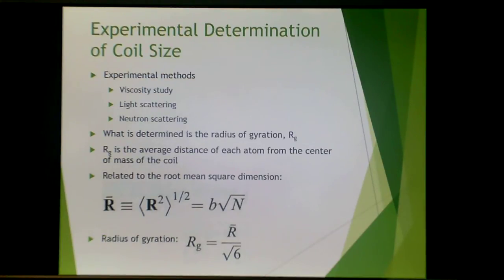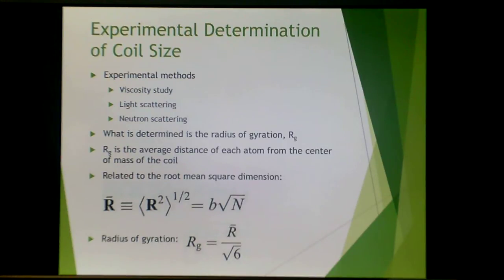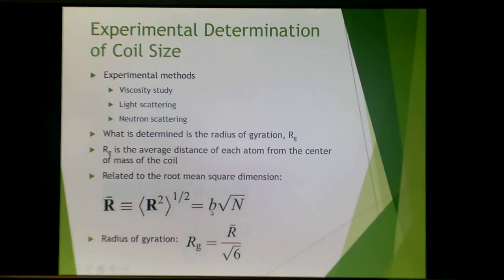There are various ways to experimentally determine coil size, including viscosity, light scattering, and neutron scattering. What you actually determine is the radius of gyration, or Rg. Rg is the average distance of each atom from the center of mass of the coil, and it is related to the root-mean-square dimension — the radius of gyration equals the root-mean-square divided by the square root of 6.